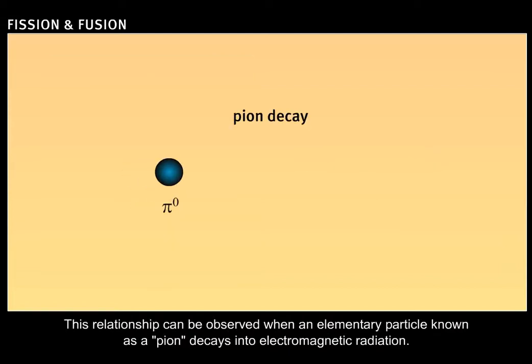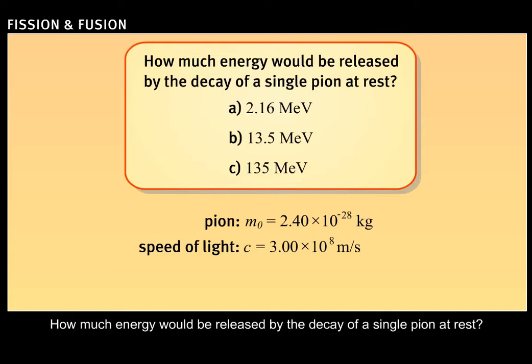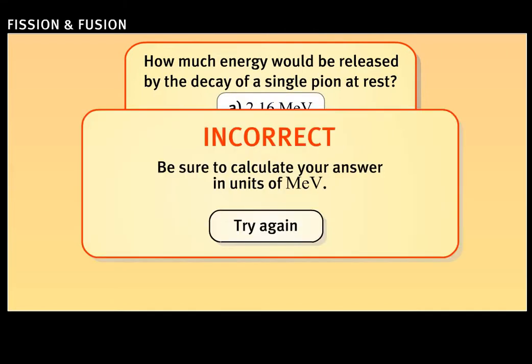This relationship can be observed when an elementary particle known as a pion decays into electromagnetic radiation. How much energy would be released by the decay of a single pion at rest? Incorrect. Be sure to calculate your answers in units of MeV. Try again.